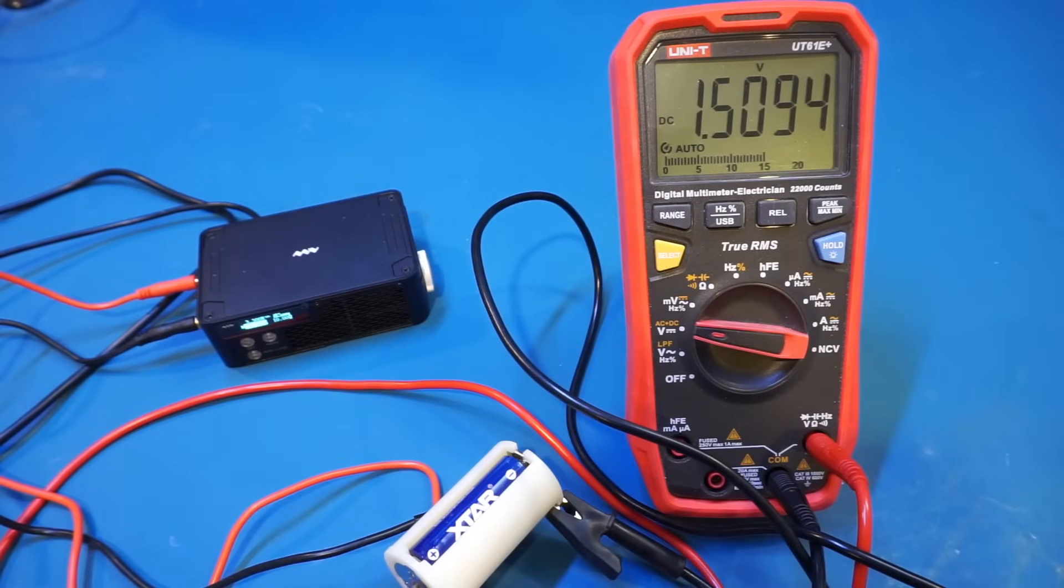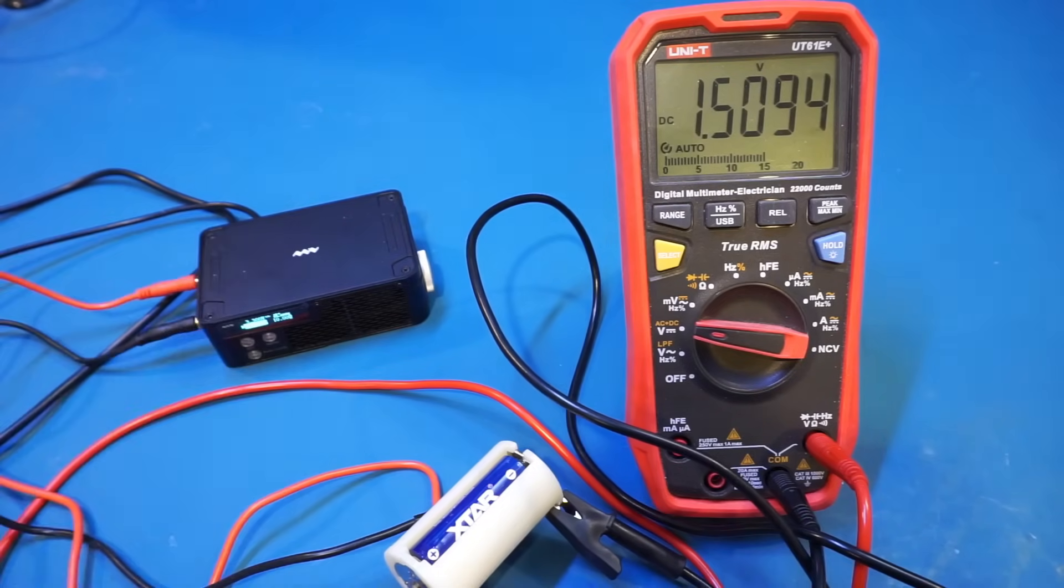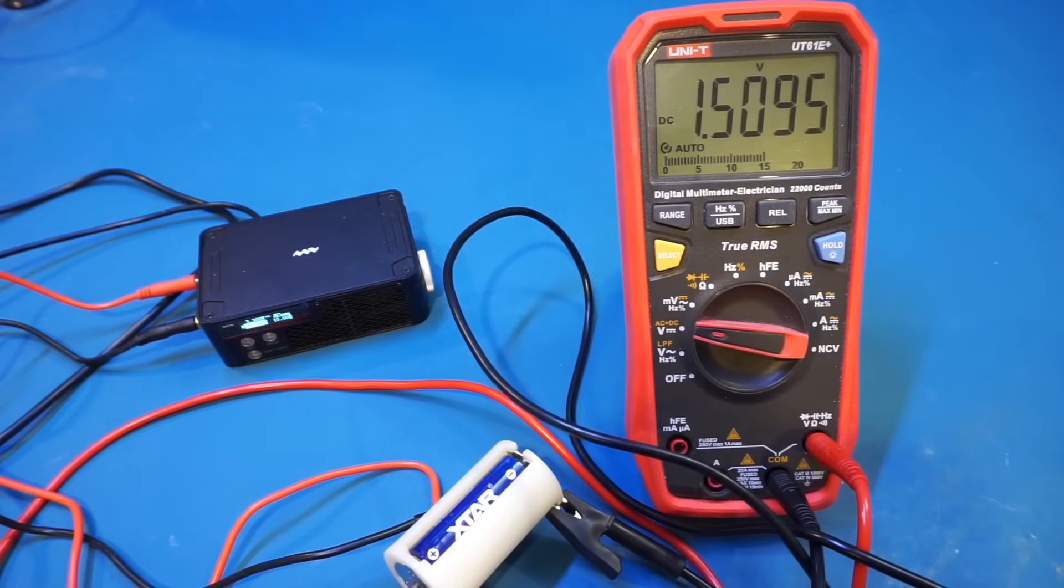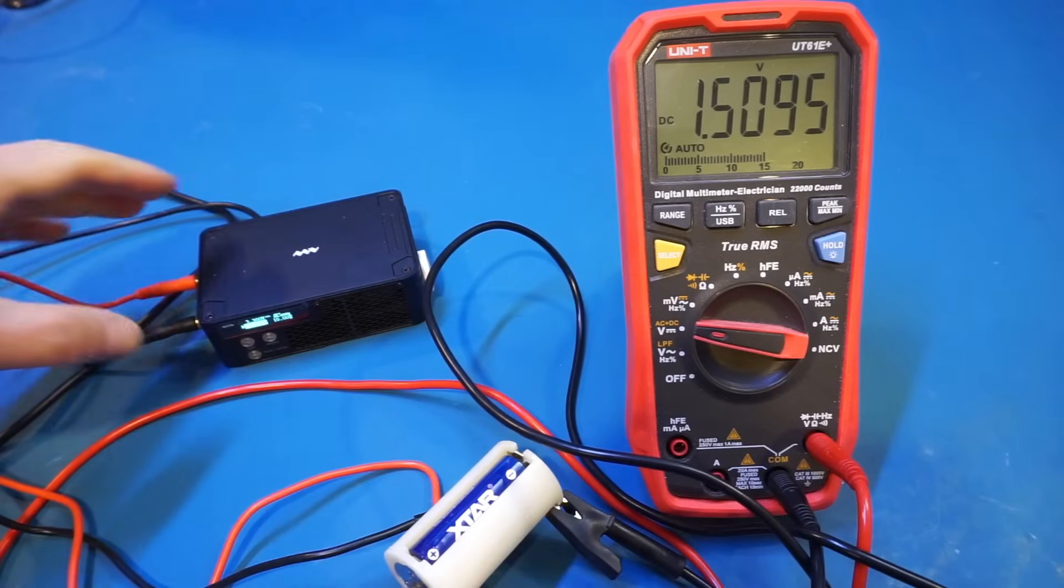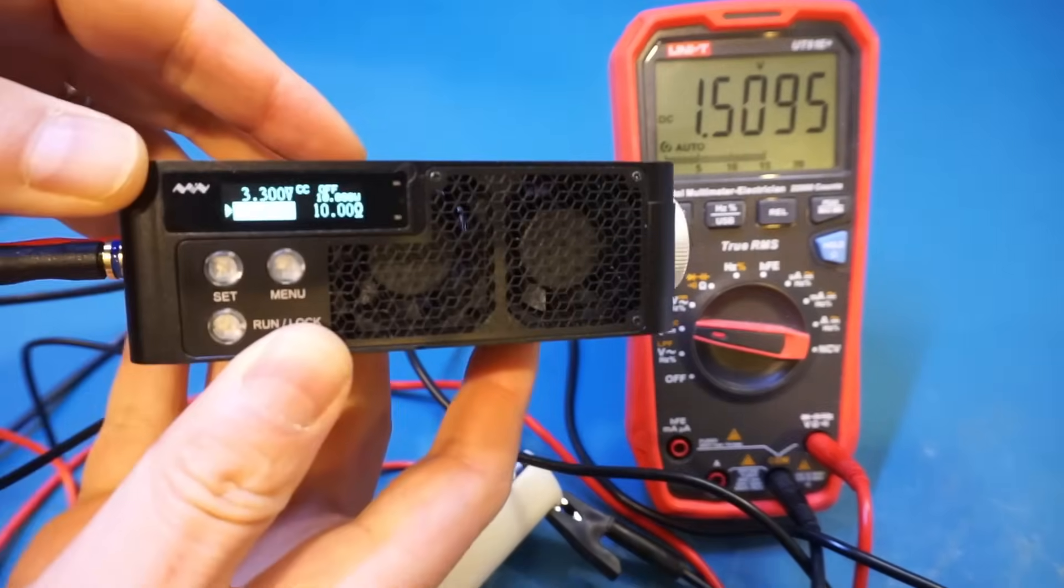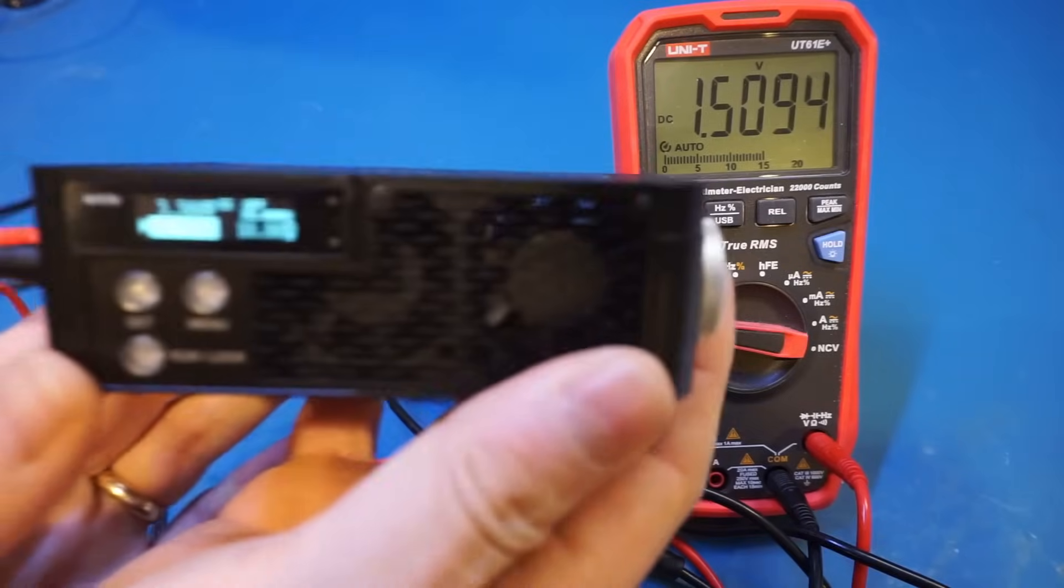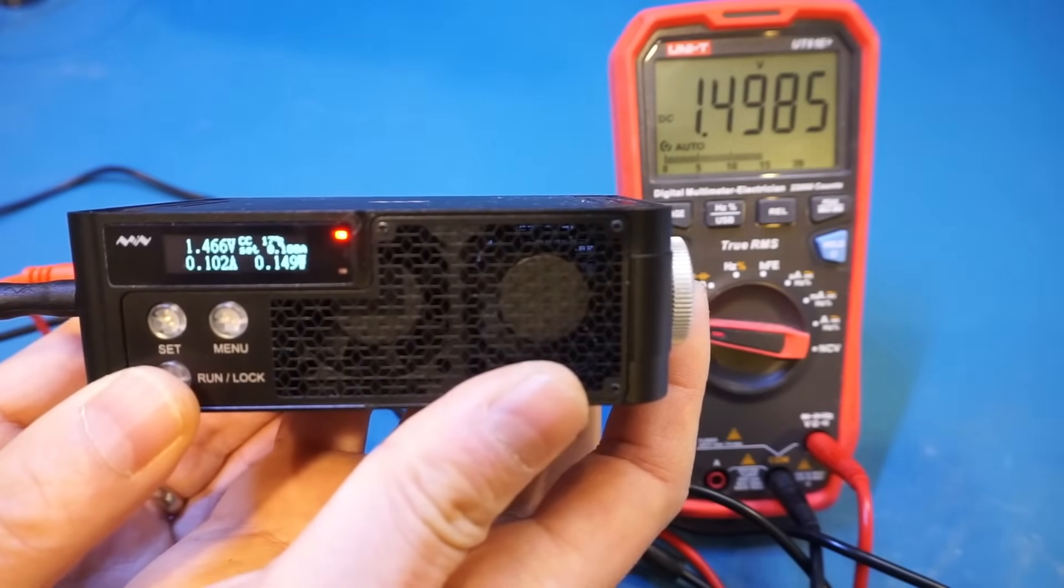And now let's get a sense of the discharging characteristics of the battery. For this test, I'm using the MiniWare MDP-L1060 electronic load. I did a review on this electronic load a few weeks ago, and you can check it out if you are interested. So at the moment the electronic load is off, you can see the terminal voltage measured is 1.5 volts. So let's actually turn on the electronic load. You can see here I set it to 100 milliamps right now. And let me enable the electronic load.